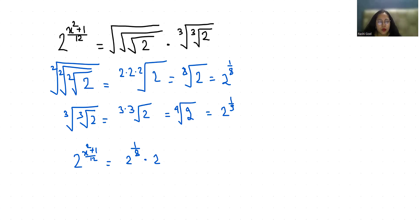Now according to exponent rule, x power m times x power n equals x power m plus n. So 2 power x square plus 1 by 12 equals 2 power 1 by 8 plus 1 by 9. Now if we compare both sides, the base are equal, their powers are also equal. So x square plus 1 by 12 equals 1 by 8 plus 1 by 9.